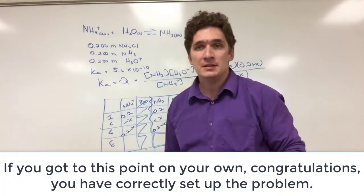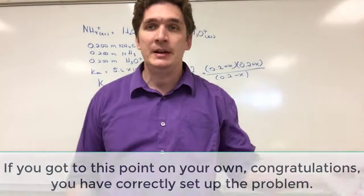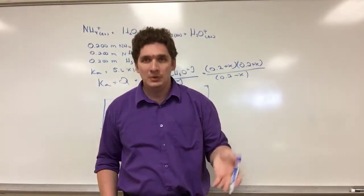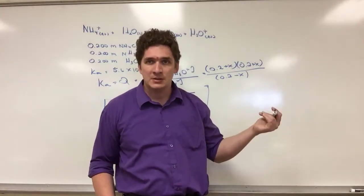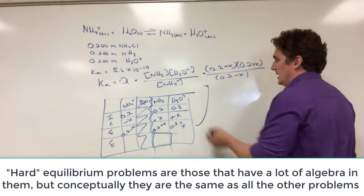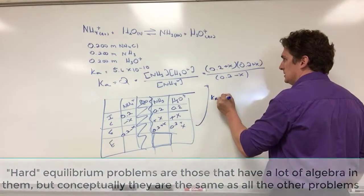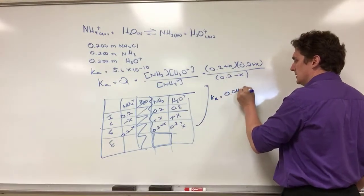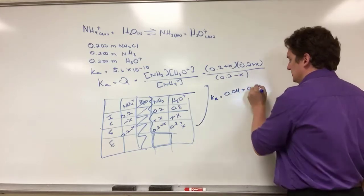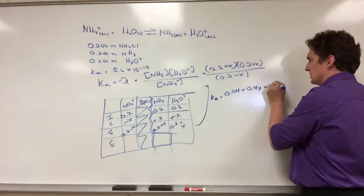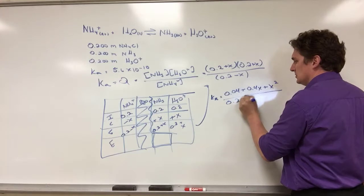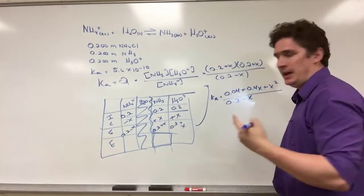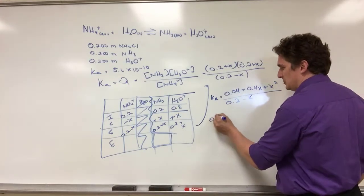I say, okay what makes this a hard problem then? You've set up 90% of the problem. I said, well really what makes this hard is this algebra. So if I look at this problem, I'm going to get Ka equals 0.04 plus 0.4X plus X squared, all over 0.2 minus X.